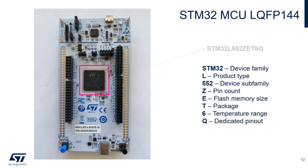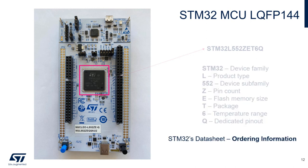Details that you can derive from the micro's naming convention include, but are not limited to, product type, subfamily, pin count, flash memory size, and package. All of this information can be found in the microcontroller's datasheet, namely under the Ordering Information section.